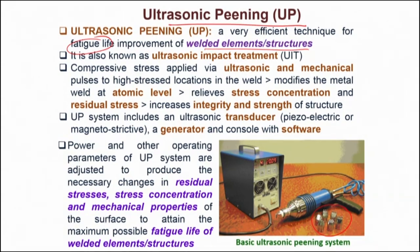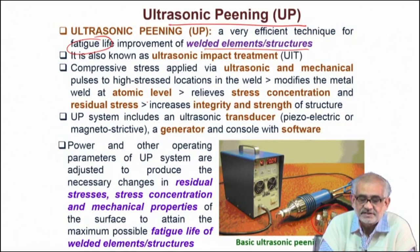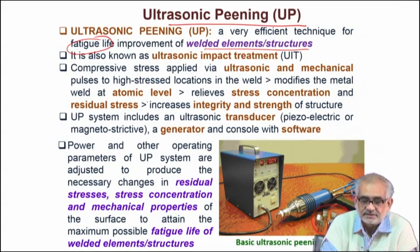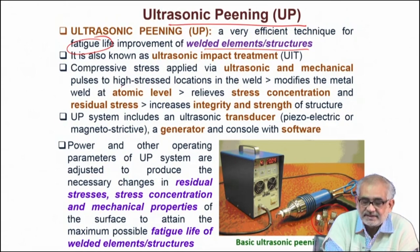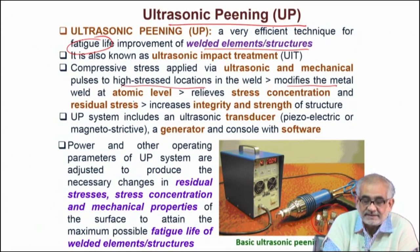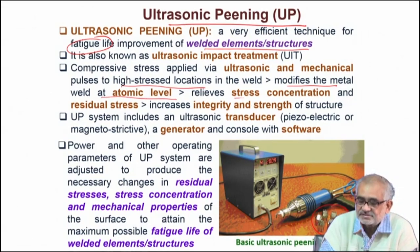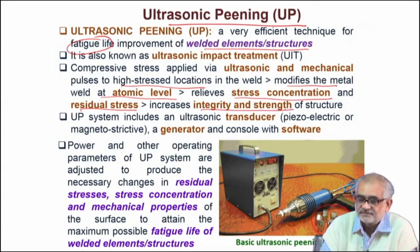These are essentially very high frequency pulses — the very name ultrasound gives the impression that we are talking about very high frequency waves. These waves basically create mechanical motion and kinetic energy, and we target highly stressed locations in the weld. We want to modify the metal at the weld junctions at the weldments at very shallow depth, typically at atomic scales. This relieves stress concentration and residual stress, and increases the integrity and strength of the structure.